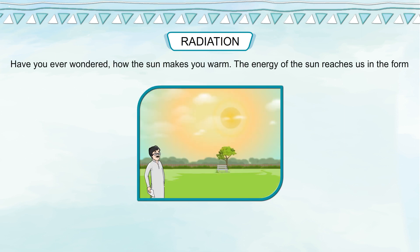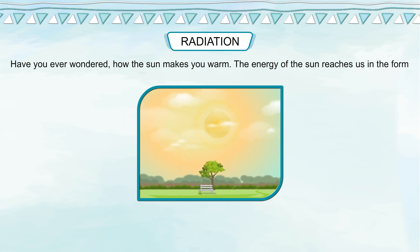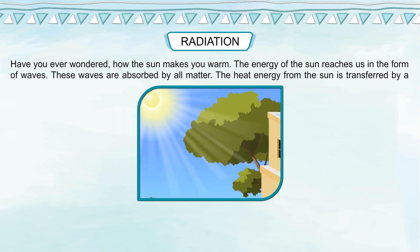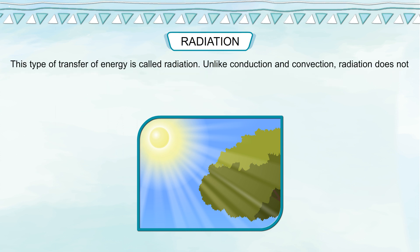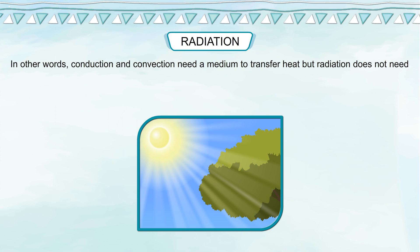Radiation: Have you ever wondered how the sun makes you warm? The energy of the sun reaches us in the form of waves, which are absorbed by all matter. The heat energy from the sun is transferred by infrared waves. When a body absorbs infrared waves, it heats up — this type of transfer of energy is called radiation. Unlike conduction and convection, radiation does not need a substance or particles to transfer energy; radiations can travel through vacuum. Conduction and convection need a medium to transfer heat, but radiation does not.